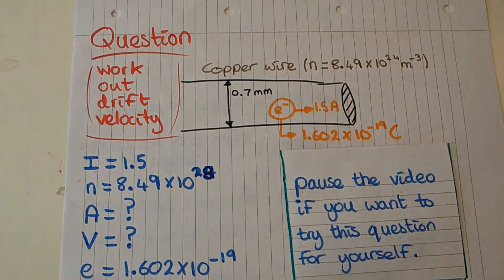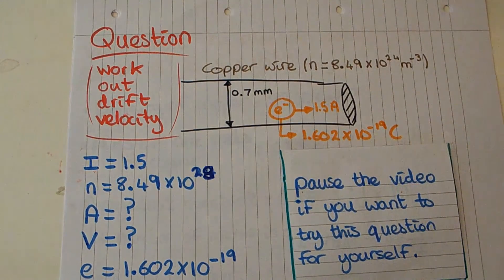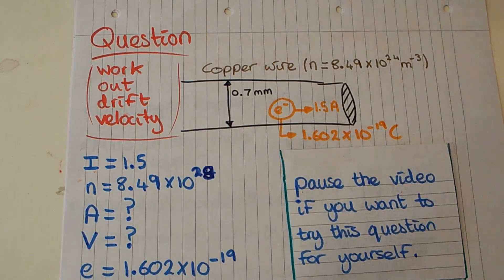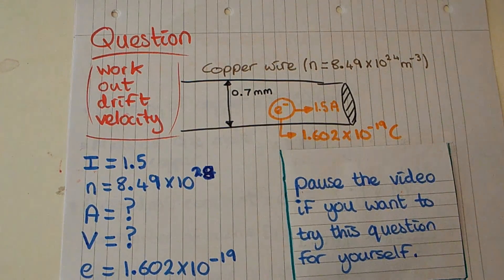We've got a question and it wants us to work out the drift velocity of electrons passing through a copper wire. We're given that the electron density of copper wire is 8.49 times 10 to the 28 per meter cubed, and the current flowing through this wire is 1.5 amps.